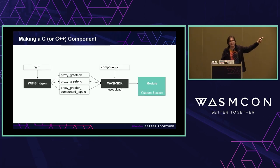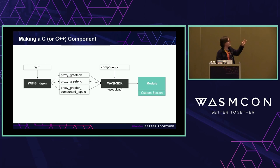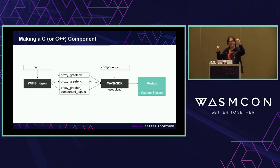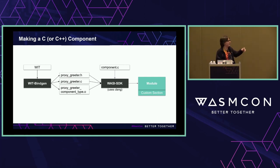Concretely, this is how you do that for C. wit-bindgen has a C export and it makes a header file and source file named for your world — in this case, proxy greeter — and an object file that contains the type info we need to smuggle into the system through a custom section that gets interpreted by the component new tool. We combine that with component.c, which has our actual logic for proxy greeter, to get the module we need. From the module, we run component new again and it works.